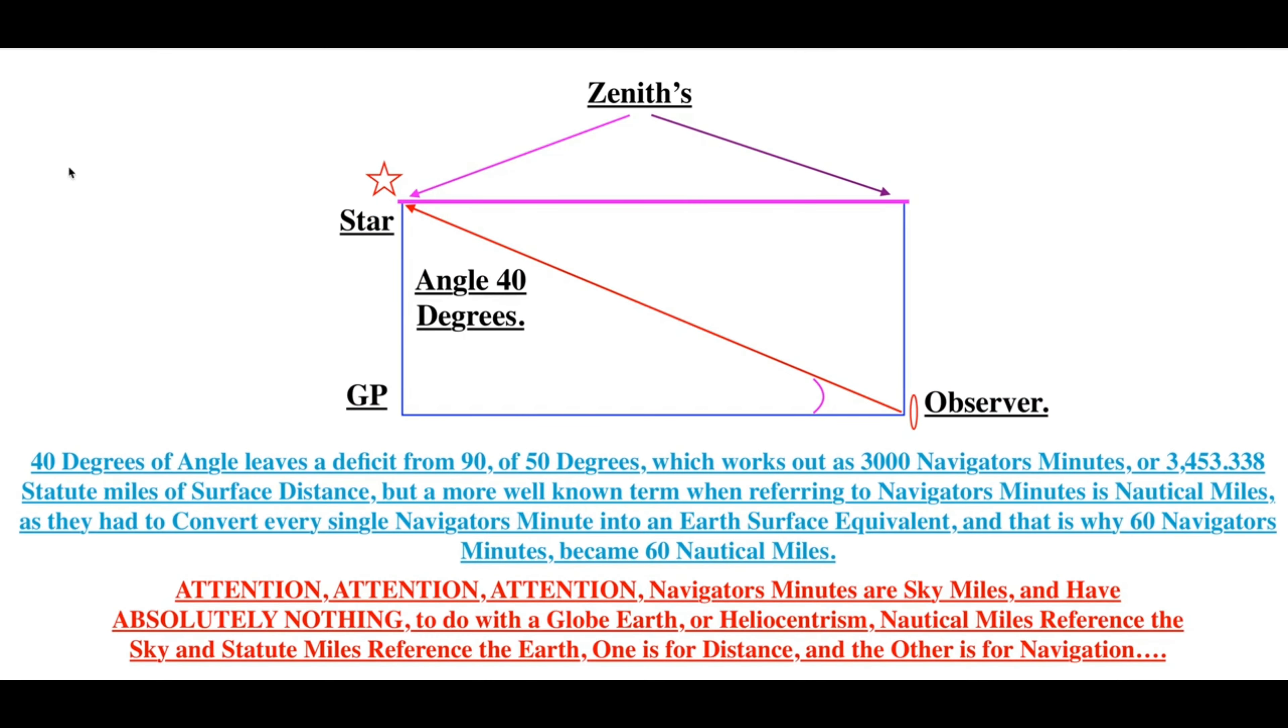This is very simple. Here is the GP of the star. Here is the observer. Here is a 40-degree angle to the star, which is here. This is the observer zenith here. This is the zenith of the GP of the star. They have a co-altitude. And you're going to read this out here, then I'm going to show a very quick demonstration to show exactly what nautical miles are and why there are 60 nautical miles per degree.